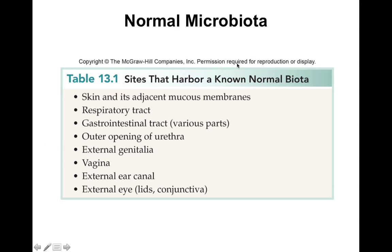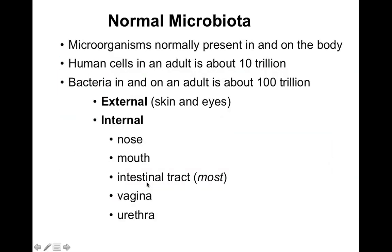Normal microbiota can be found pretty much everywhere: skin-adjacent mucous membranes, respiratory tract, gastrointestinal tract, outer opening of the urethra, external genitalia, vagina, external ear canal, and external eyelids. Human cells in an adult number about 10 trillion, while bacteria number about 100 trillion — a tenfold increase. Internally, the nose, mouth, intestinal tract, vagina, and urethra harbor microbiota, with the intestinal tract being where the majority of internal microbiota are located.